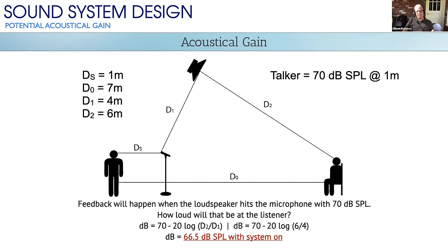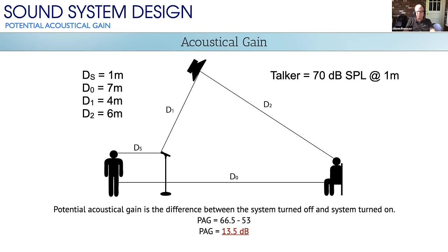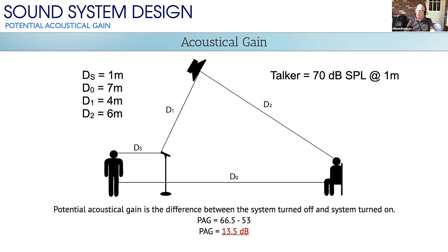The gain is the difference between the system turned on and the system turned off: 66.5 minus 53 gives us 13.5 dB. That means we can make the show 13.5 dB louder by simply running the fader up to the feedback point and stopping. That's not a particularly staggering amount of gain, and 66.5 dB SPL is not a particularly loud show — it's quieter than most close-contact conversations.